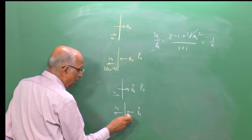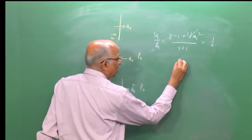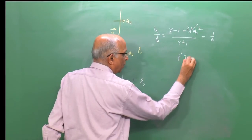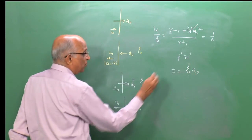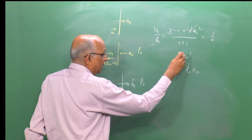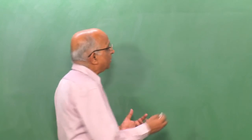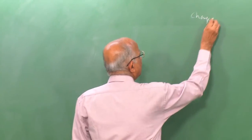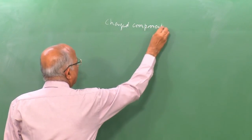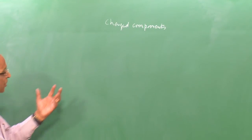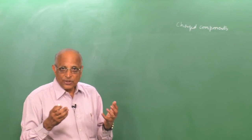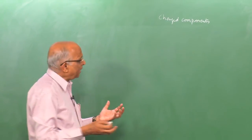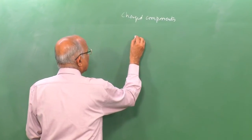How did we get Z = ρ₀a₀? From the mass balance equation, we neglected ρ prime × u prime — the product of density and velocity fluctuations — under the condition that this product is small compared to ρ₀a₀. Even for strong shocks, the product of perturbed velocity and density fluctuation remains very much smaller than the product of initial density and shock velocity.